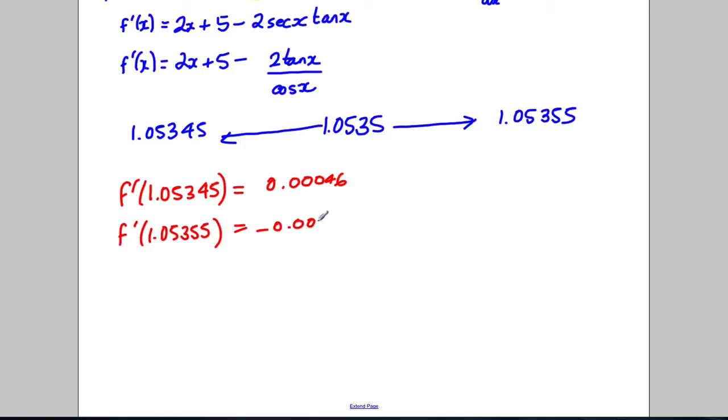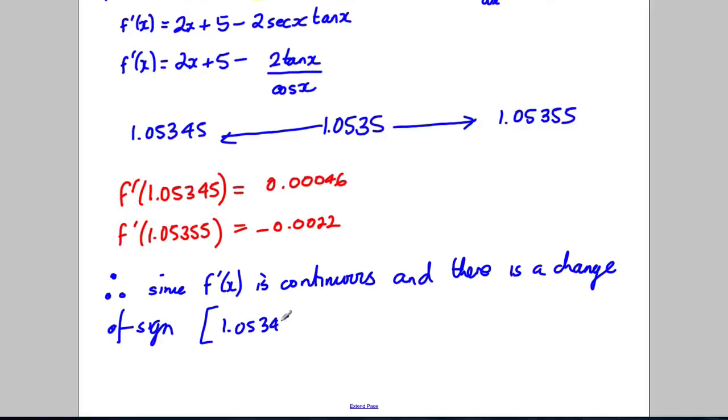And therefore, you can state, therefore, since f dashed x is continuous, you must state that. And there is a change of sign between 1.05345 and 1.05355.